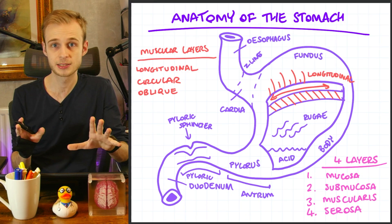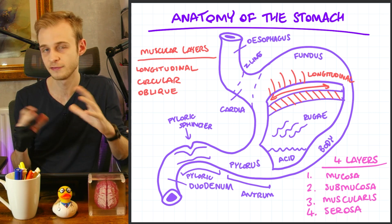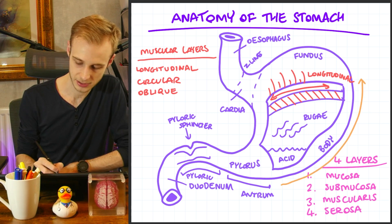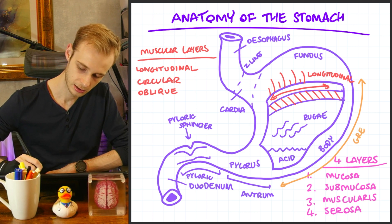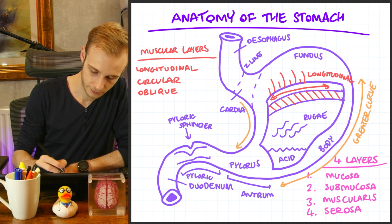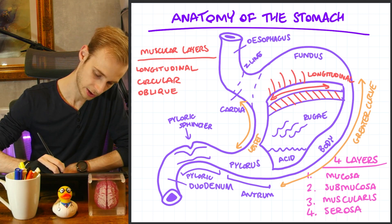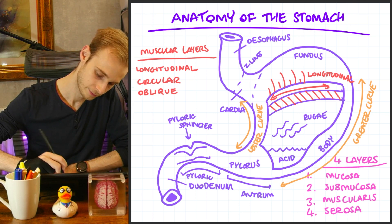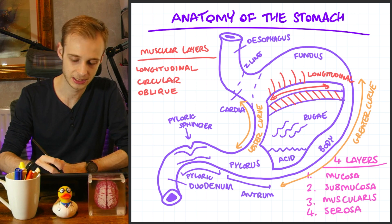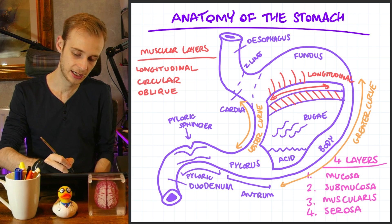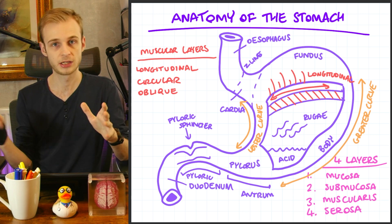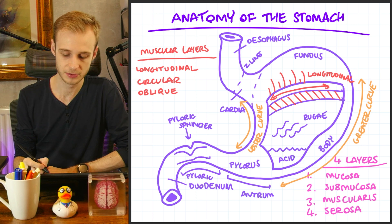Before we move on to the blood supply, there are a few more named features to be aware of. The first is the greater and lesser curves. The greater curve is the bigger curved area of the stomach on the outside. The lesser curve is the smaller one on the inside, as the esophagus runs down towards the pyloric sphincter. The greater curve is where a large sheet of the omentum — part of the mesentery on the inside of the abdomen — hangs down.